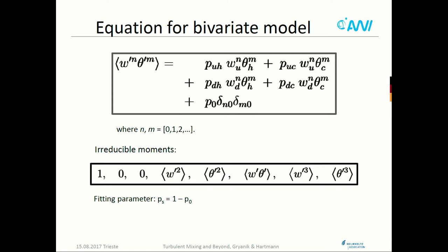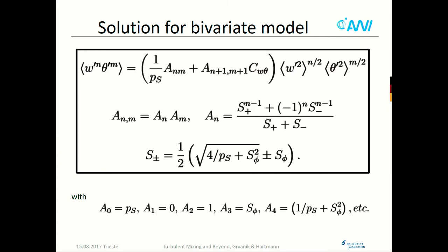We have equations for moments that look like this. Any of these moments can be chosen as irreducible, but the simplest choice is: normalization, zero mean field, variances, flux, and two third-order moments in vertical velocity and temperature. These form the basis for everything that follows. Fortunately, this system has a nice analytical solution for all moments. The structure is similar to Gaussian but a little more complex — here are variances to corresponding powers and polynomials in correlation coefficients.